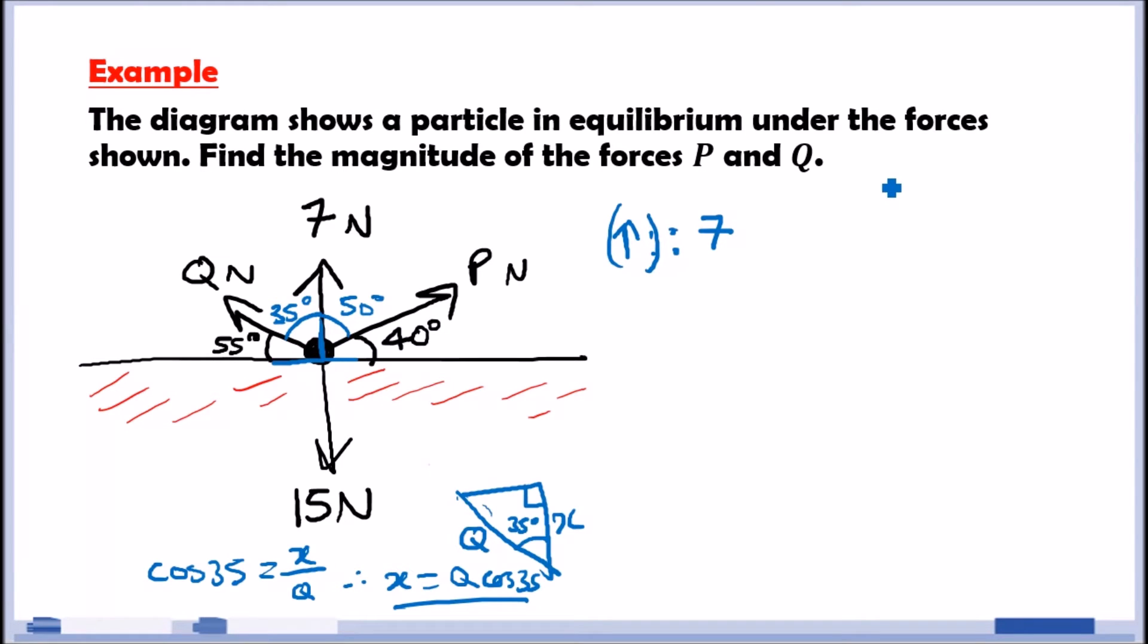Because we have the angles here, we use P cos 50, plus P cos 50. We also have a positive Q, so plus Q cos 35. We take the angle closest to the vertical. Now, looking downwards, we have 15 perfectly straight. Perfectly vertical would be minus 15. And all of this is in equilibrium, which is 0.